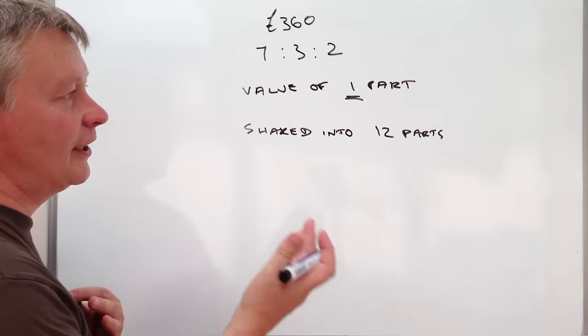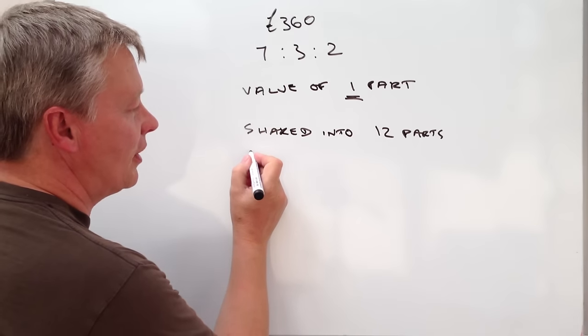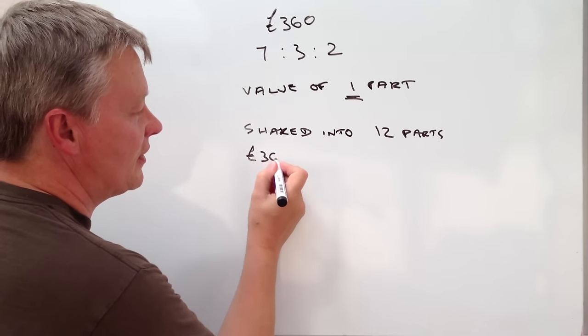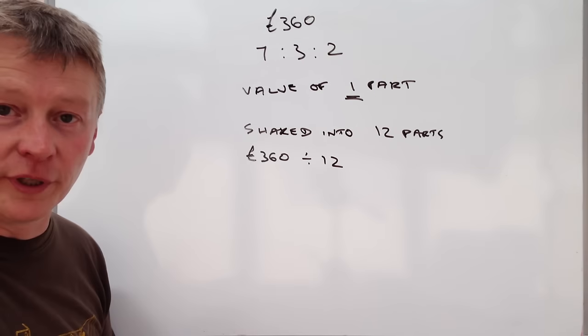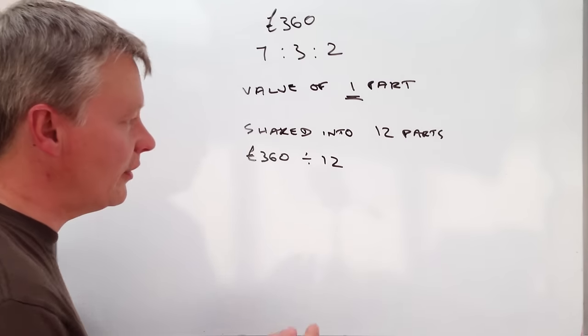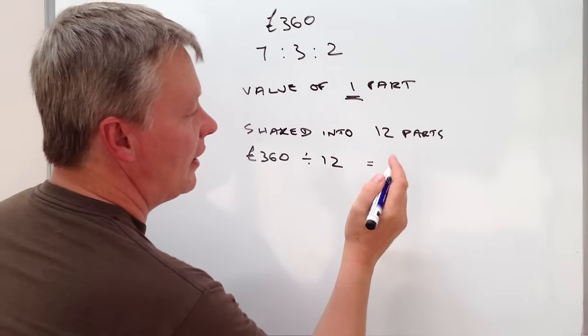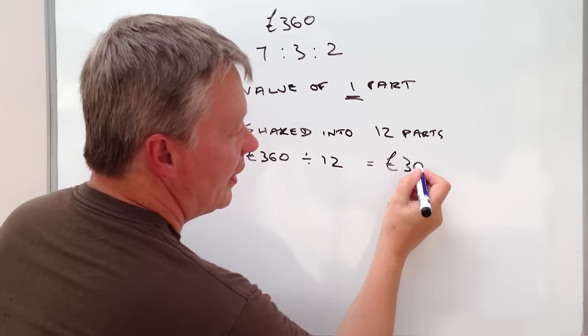So in order to find the value of one part, what I'm going to do is I'm going to divide £360 divided by 12 and that will give me the value of one part. In other words, each part is going to be worth £30.